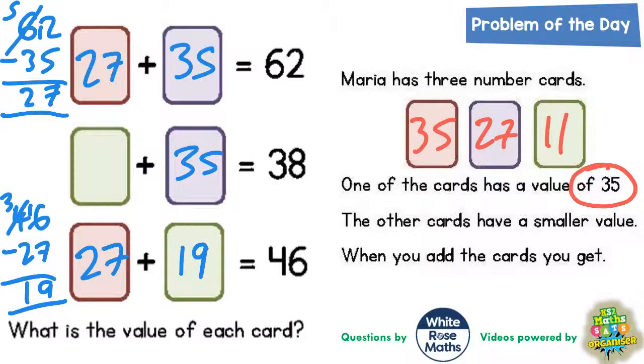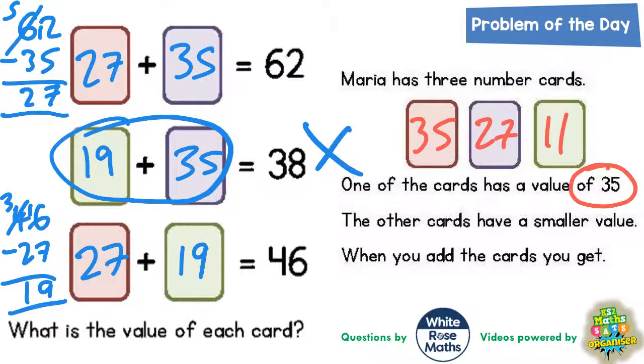But if this green one is worth 19, then that means this green one would have to be worth 19. And then we've got a statement which doesn't make sense, because 19 add 35 most definitely is not 38. And all three statements have to work out correctly for the values to be correct.